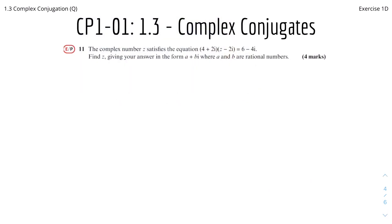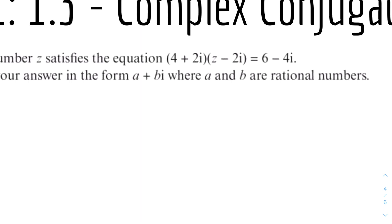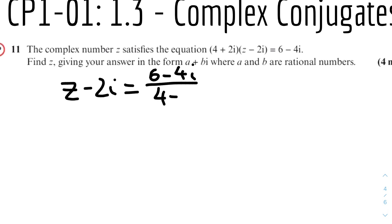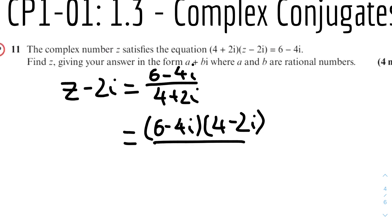Question 3: the complex number z satisfies (4 + 2i)(z - 2i) = 6 - 4i. Find z giving your answer in a + bi where a and b are rational numbers. We divide both sides by 4 + 2i first, giving z - 2i = (6 - 4i) / (4 + 2i). We then rationalize the denominator by multiplying top and bottom by 4 - 2i.